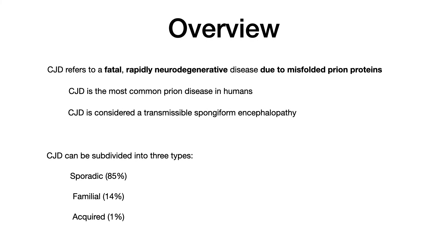Lastly, there is the acquired subtype. Not really relevant for exam purposes, but as an interesting aside, acquired CJD occurs when there's a contaminated piece of equipment in certain surgical procedures — this has historically been associated with things like corneal transplants, for example.